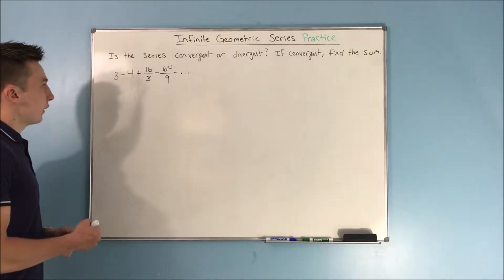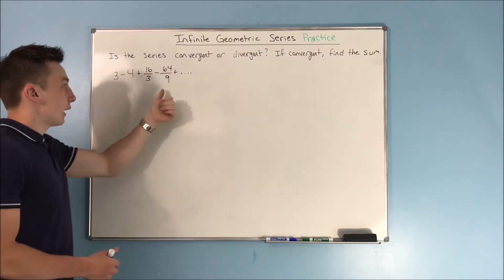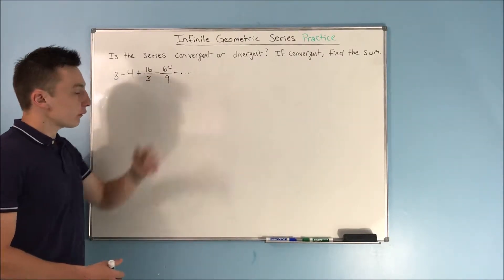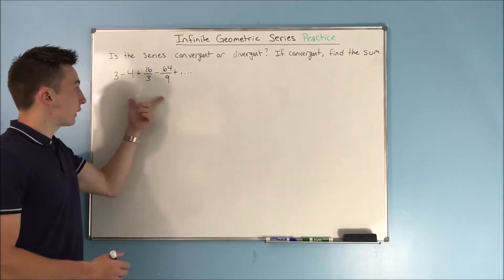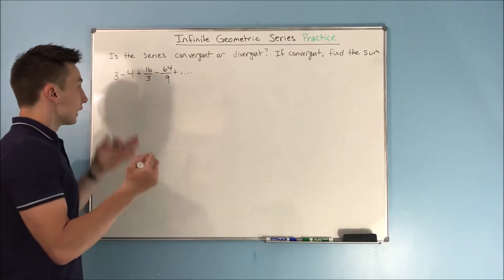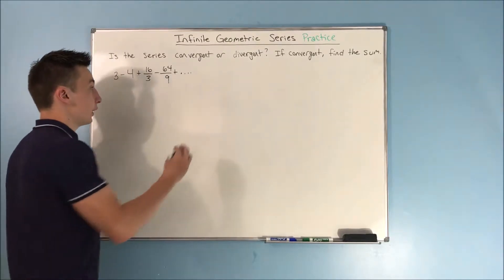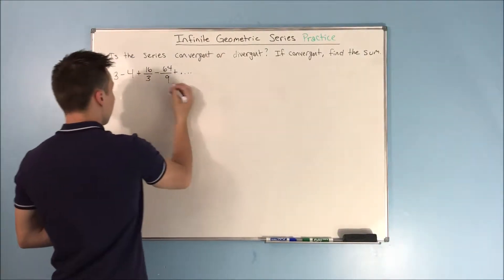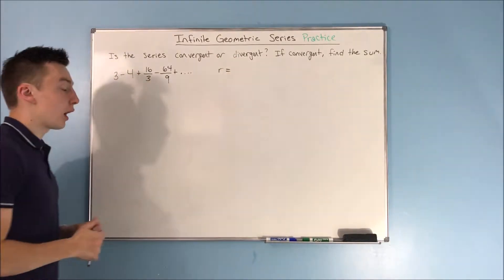So, we have our first series right here. We have 3, minus 4, plus 16 over 3, minus 64 over 9, and so on. And the first thing that we need to do for this particular series is find the common ratio. Since it's a series that's all drawn out, we can easily find that common ratio. So, for this series, what is R going to equal? R is our common ratio.